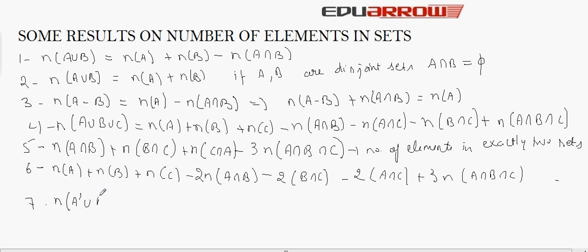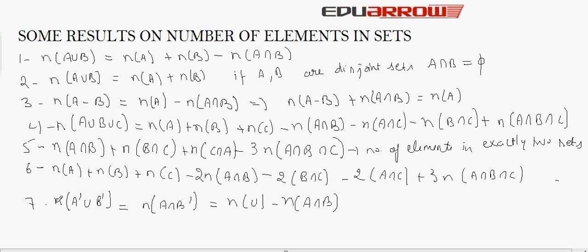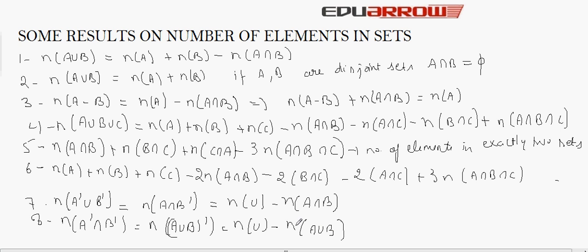The next result is that n(A complement union B complement), that is the number of elements in A complement union B complement, equals the number of elements in (A intersection B) complement. These are some standard results which we use while solving questions on this topic.